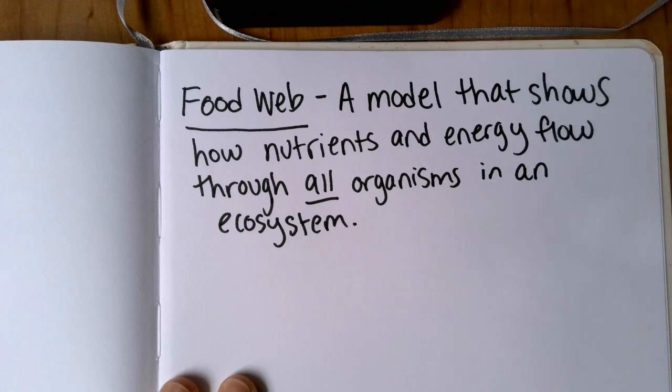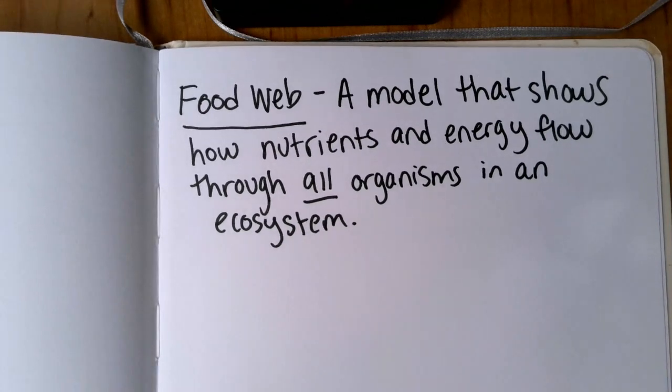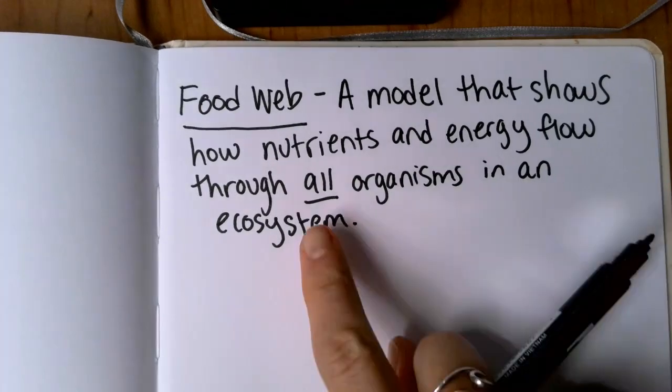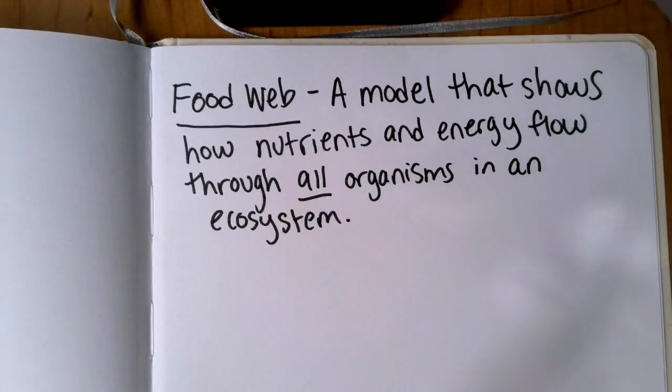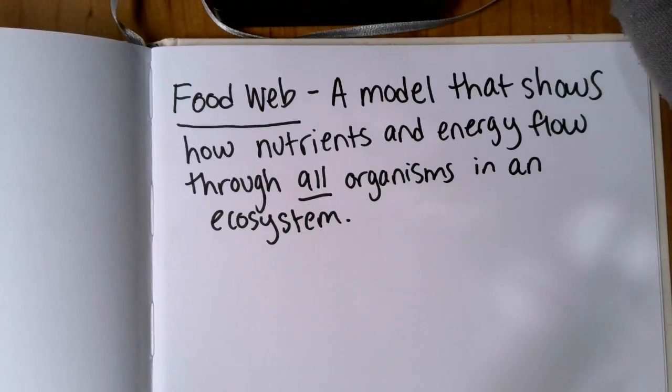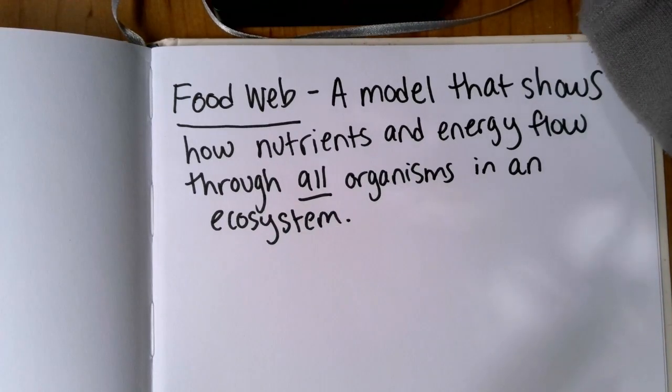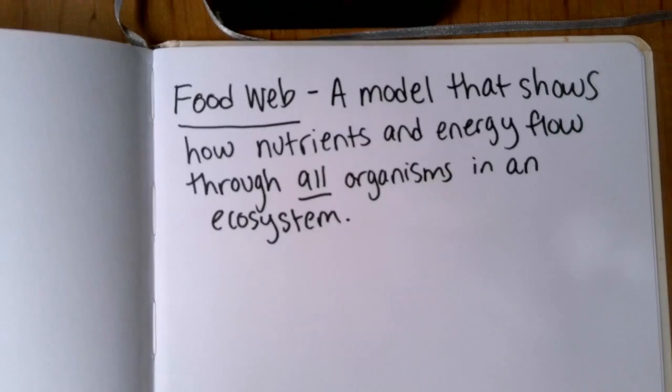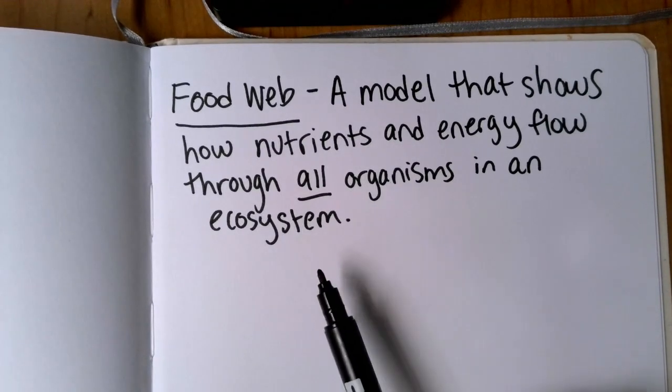All right, so if you think about a food web and compare it to a food chain, here's the big difference: this word all. When we had food chains and we were drawing those last week, a food chain only shows a few organisms. It's really simple. When we draw this food web, we're going to make it more complicated and that's going to show what actually happens in nature.